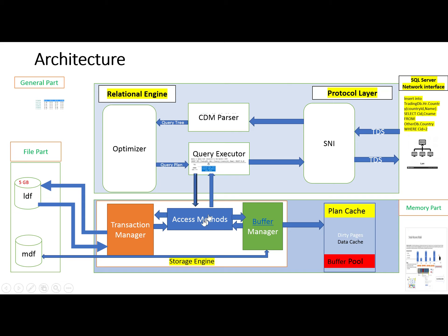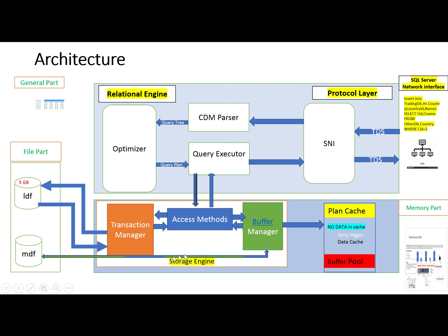The query executor, with the help of the storage engine, executes the query. In the storage engine, the access method checks the SELECT part of the query. The access method sends it to the buffer manager to check if the requested data is already in the plan cache. If not, the buffer manager issues an I/O request to the data file on disk, retrieves the data, and keeps a copy in the plan cache.